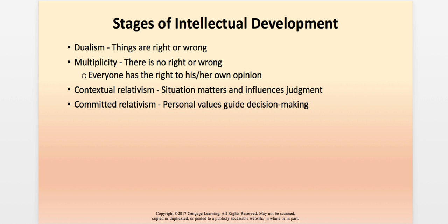Contextually relativistic thinkers see different points of view or frames of reference that vary in terms of their value or utility according to the situation or circumstance. A committed relativistic thinker adopts a general philosophy with a set of values or guiding principles that involve an approach to life and consider various points of view. Personal values guide decision-making. These values tend to be almost transcendent — human rights, social justice — and with these, committed thinkers can prioritize, make decisions, and take action based upon those values.